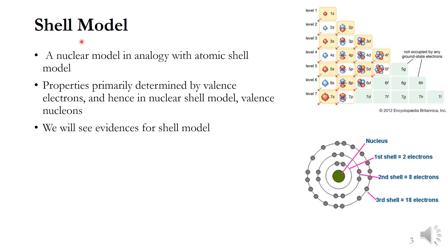Shell model of nucleus: in analogy with the atomic shell model, we have the nuclear shell model. We know that in the atomic case, the properties of an atom are primarily determined by the valence electrons. And hence, in the nuclear shell model also, the valence nucleons determine the properties of the nucleus.